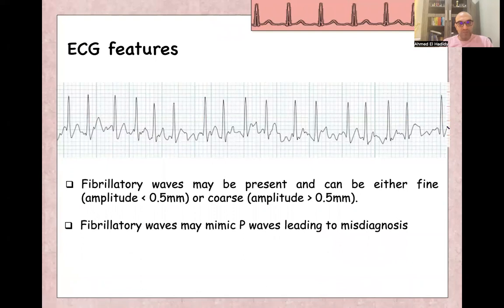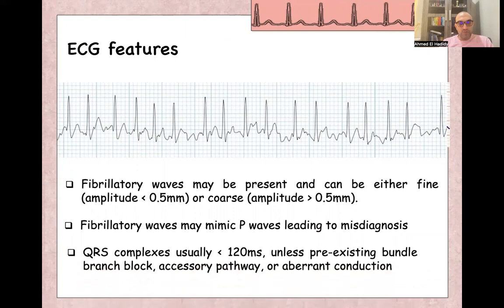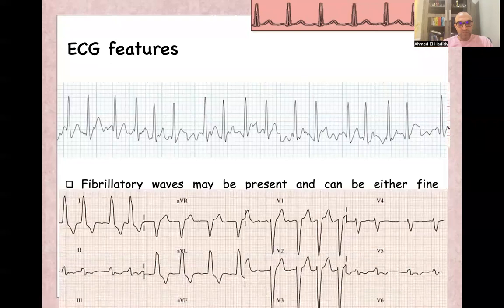Fibrillatory waves may mimic P-waves, leading to misdiagnosis. Usually, QRS complexes are narrow — less than 120 milliseconds — unless there is pre-excitation, bundle branch block, accessory pathway, or aberrant conduction.